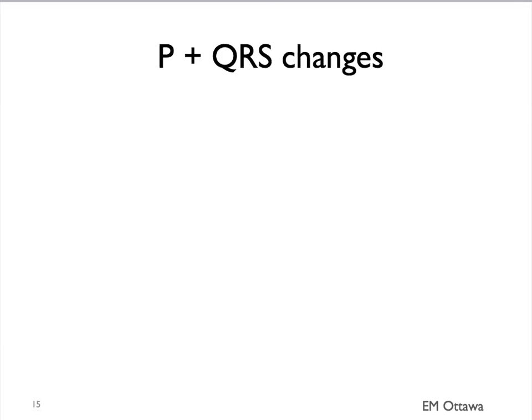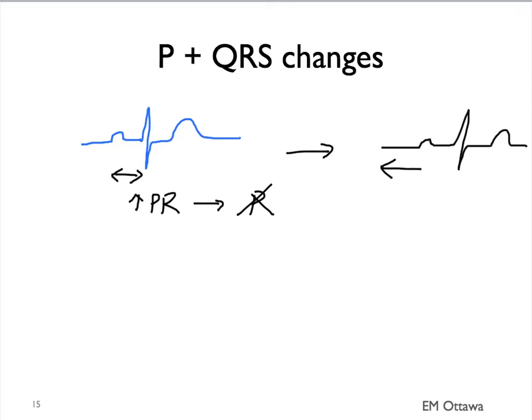As the potassium level goes higher, the atrium begins to fail. That leads to changes in the P waves. First, the PR interval lengthens, and then the P wave disappears. Think of it as almost like there is a string pulling on the left side, making the PR interval longer, and eventually pulling the P wave flat.